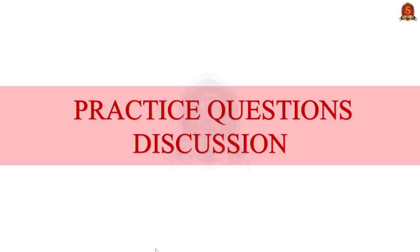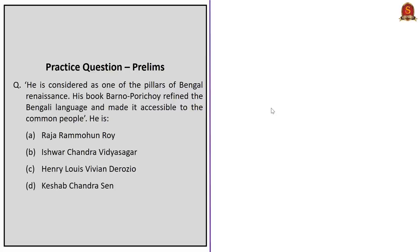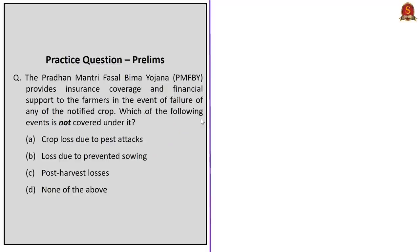We have come to the last session — the practice questions discussion. See this question: 'He is considered as one of the pillars of the Bengal Renaissance. His book Barna Parichay refined the Bengali language and made it accessible to the common people. He is —' This is a description about Ishwar Chandra Vidya Sagar. The next question is with reference to Pradhan Mantri Fasal Bima Yojana: 'PMFBY provides insurance coverage and financial support to farmers in the event of failure of any notified crop. Which of the following events is NOT covered under it? A) Crop loss due to pest attacks, B) Loss due to prevented sowing, C) Post-harvest losses.' All three are actually covered under it, so the correct answer is D — None of the above.